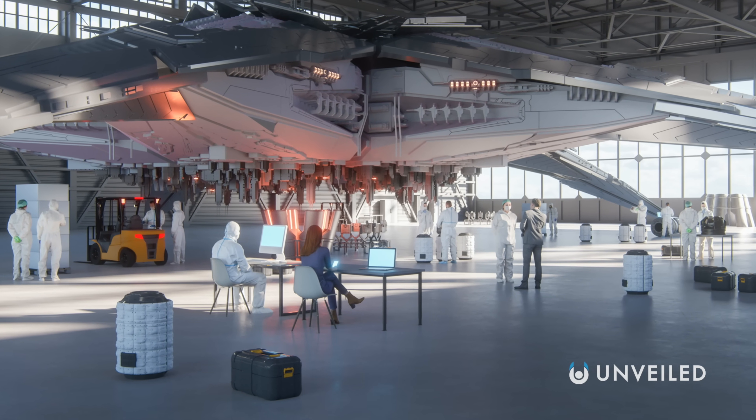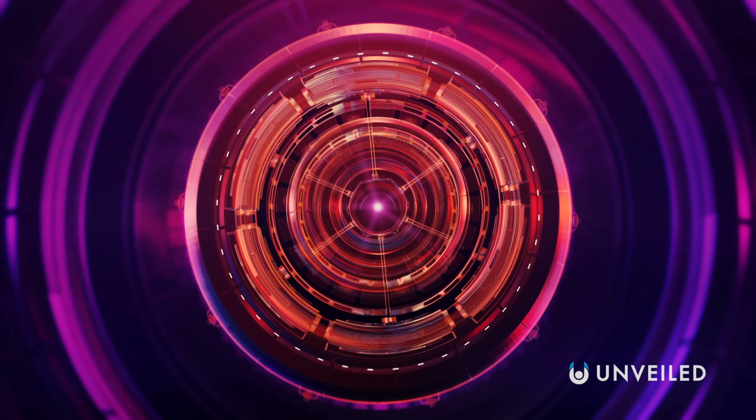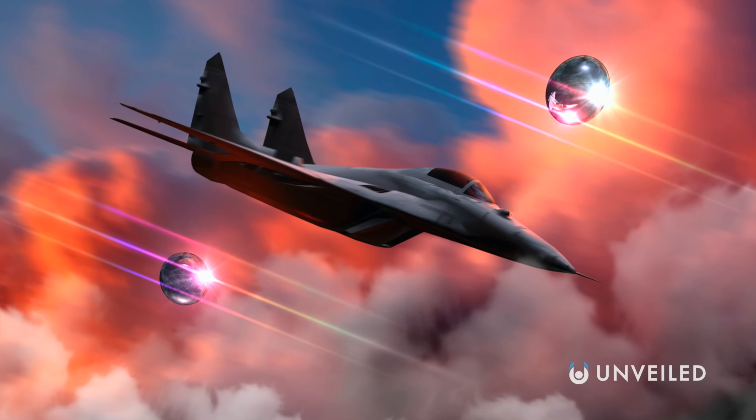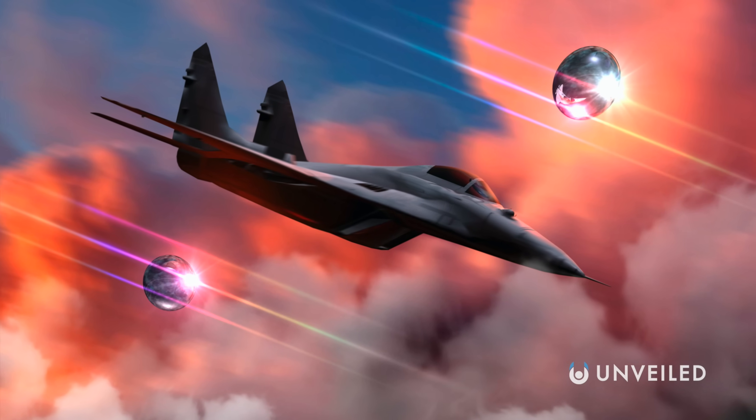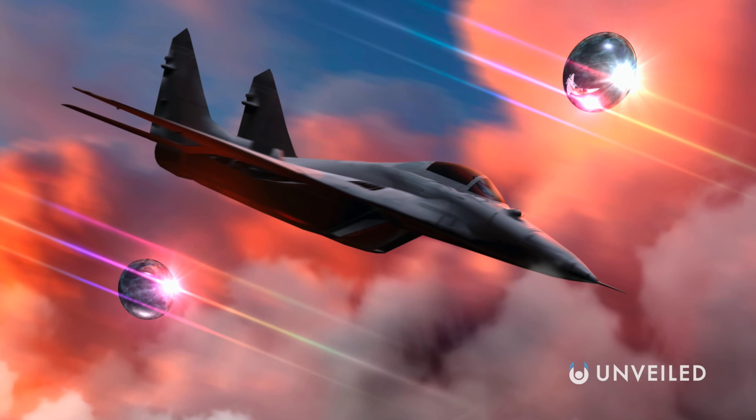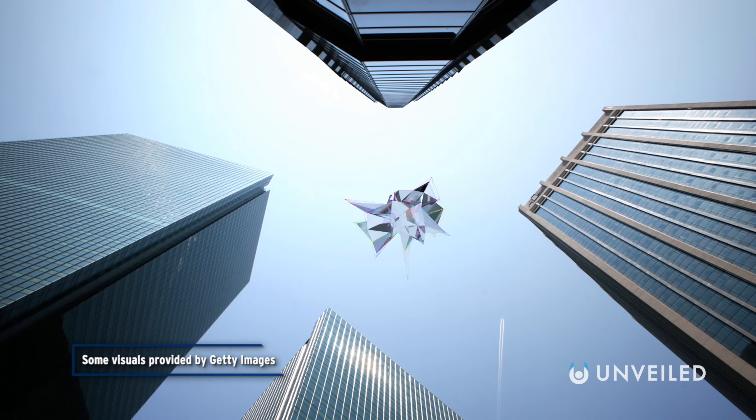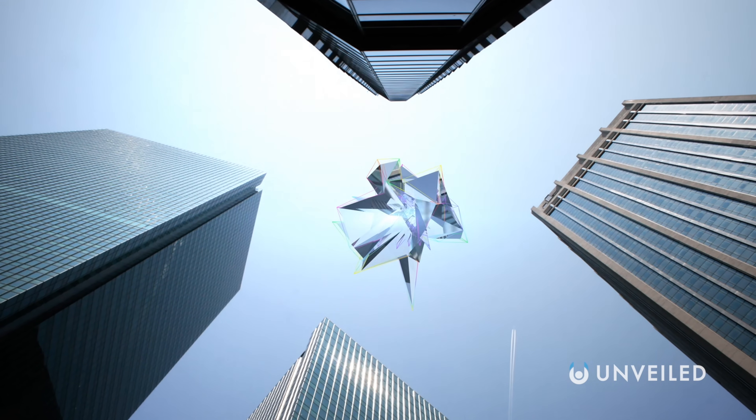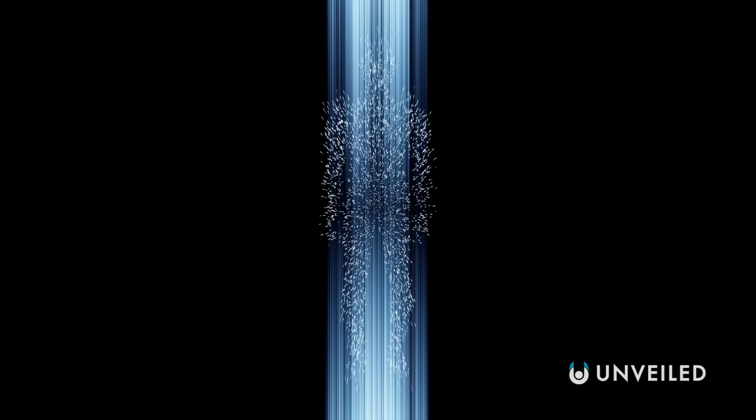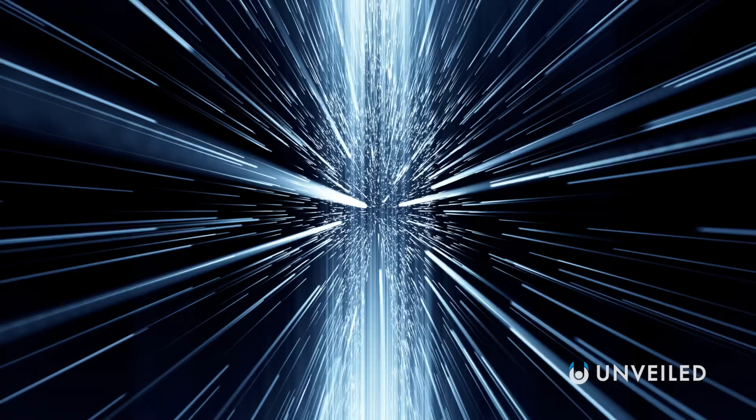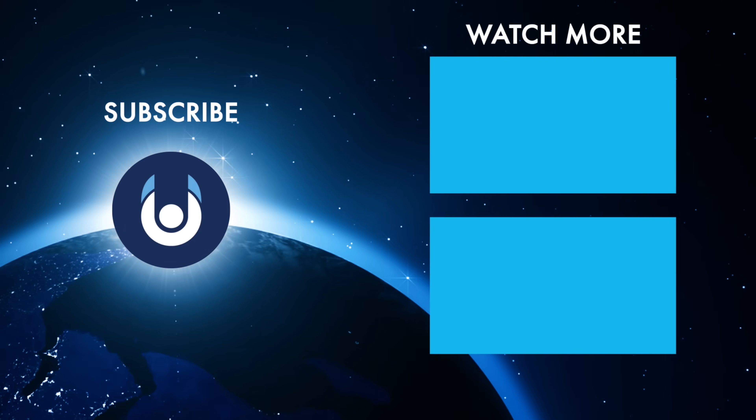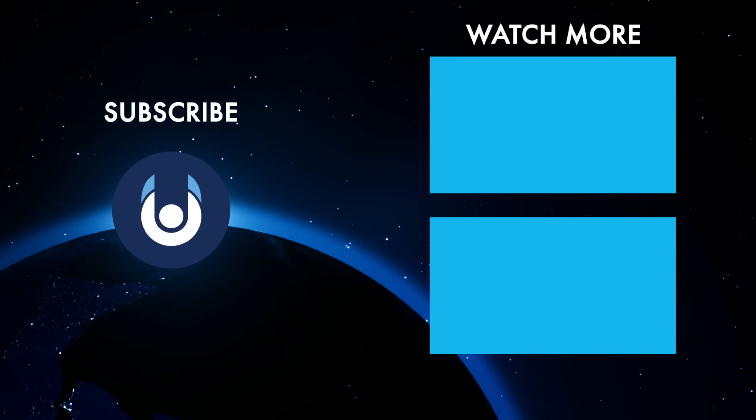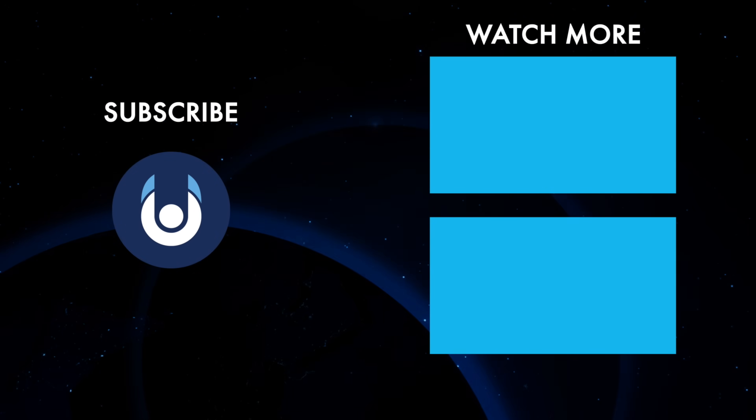Technically speaking, light speed travel might be possible, and if any one country were to unlock its secrets, then it's easy to imagine that they'd want to keep it all to themselves. As it stands, there's no genuine suggestion that this kind of tech actually is out there on Earth. But what's your verdict? Is there something happening behind the scenes? Because that's why the government could be hiding speed of light travel. What do you think? Is there anything we missed? Let us know in the comments, check out these other clips from Unveiled, and make sure you subscribe and ring the bell for our latest content.